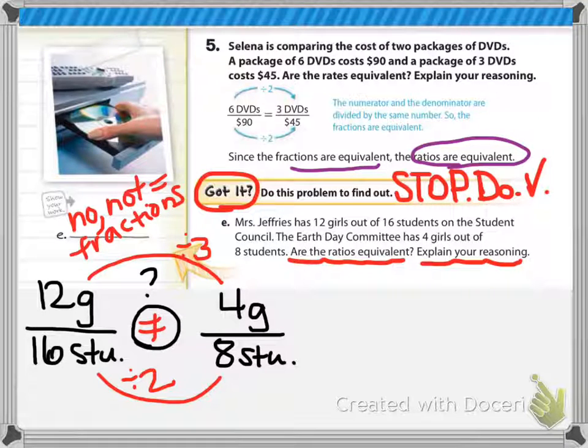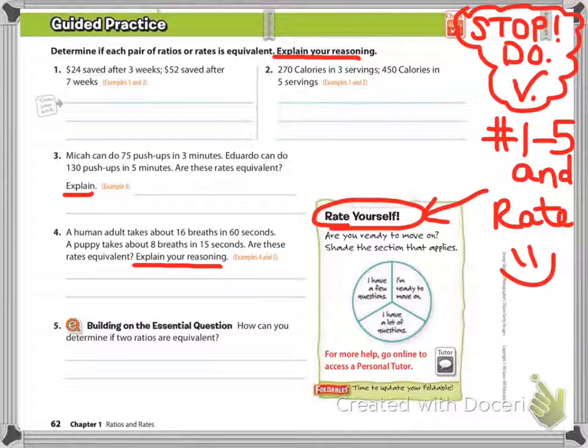So these are not equivalent ratios. Once you've copied this, move on to the next page, and this is where you are going to do the guided practice in your workbook on page 62. You're going to stop, you're going to do these problems.